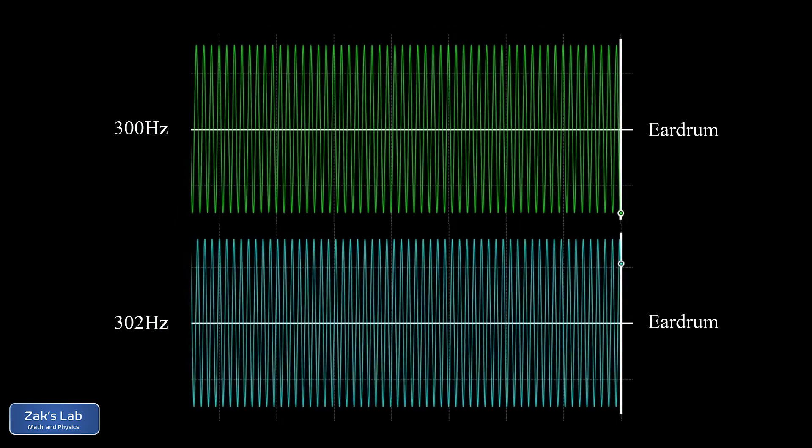To investigate the geometry behind acoustic beats, we look at our two tones separately. At the top we have a 300Hz sound wave moving to the right and arriving at the ear, and at the bottom we have a 302Hz sound wave. We're using these white markers at the eardrum to show what pressure is arriving at the eardrum at any instant in time.